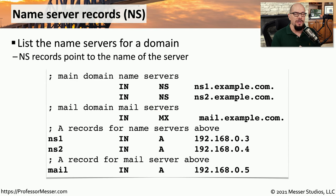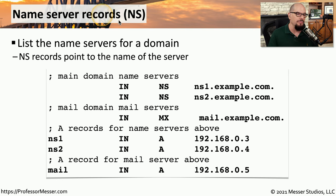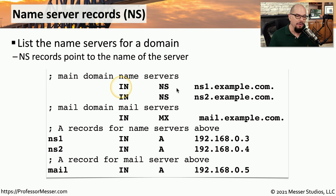In a previous video, we described DNS as being a hierarchy of name servers. For this hierarchy to work, we need references in our name server pointing to other name servers. So we add a name server record, or NS record. If someone's trying to find the name server for your domain, they can perform a query and receive a response showing that NS1 and NS2 are the name servers for this domain.